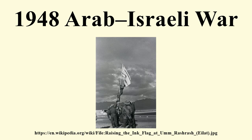As a result of the war, the State of Israel retained the area that the UN General Assembly Resolution 181 had recommended for the proposed Jewish state, as well as almost 60% of the area of the Arab state proposed by the 1948 partition plan, including the Jaffa, Lida, and Ramla area, Galilee, some parts of the Negev, a wide strip along the Tel Aviv–Jerusalem road, West Jerusalem, and some territories in the West Bank.